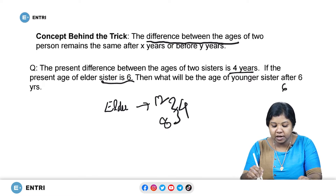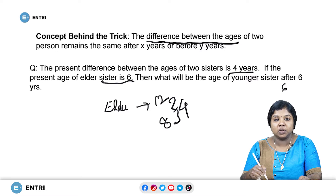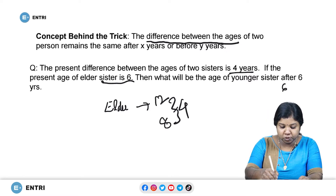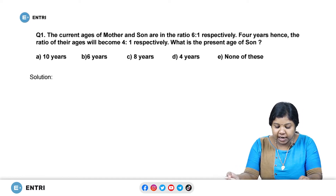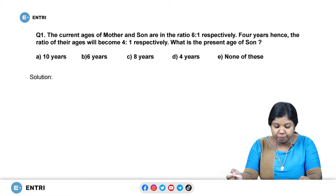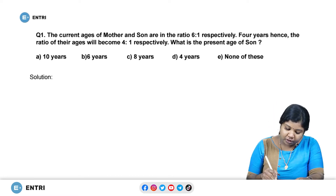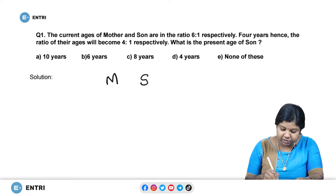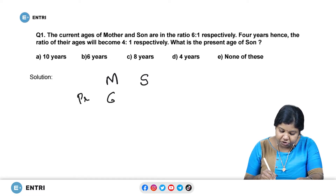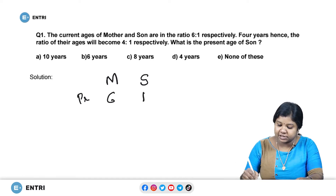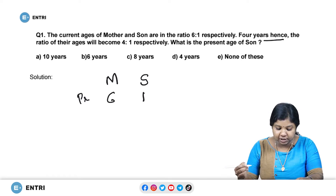This is the main concept on which the short trick for solving these questions is based. So let us move to the first problem. The current ages of mother and son are in the ratio 6 is to 1 respectively. Four years hence, the ratio of their ages will become 4 is to 1 respectively. What is the present age of the son?